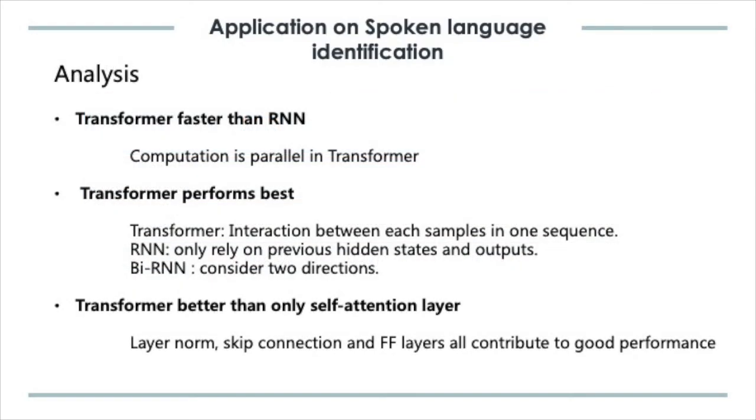The reason why transformer is faster is because RNN is a sequential model where we have to compute hidden layers one by one. Transformer, on the other hand, has parallel structure.